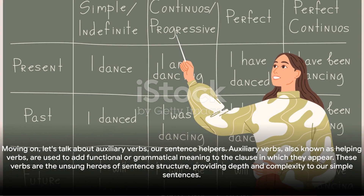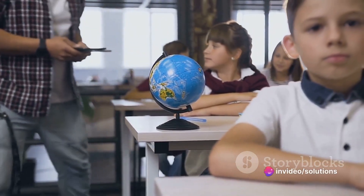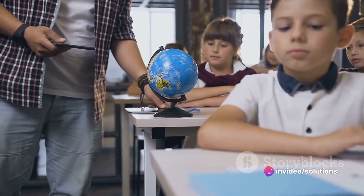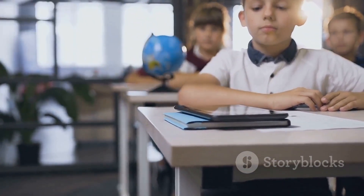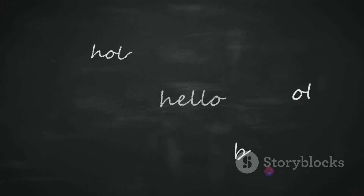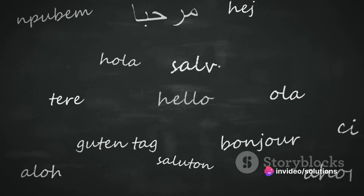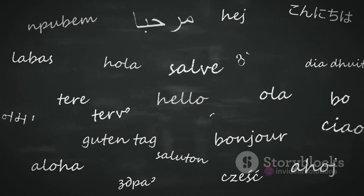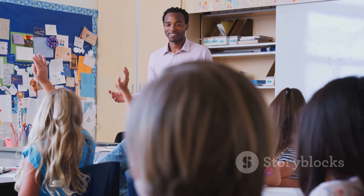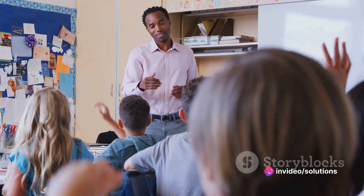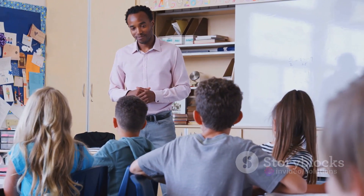Moving on, let's talk about auxiliary verbs — our sentence helpers. Auxiliary verbs, also known as helping verbs, are used to add functional or grammatical meaning to the clause in which they appear. These verbs are the unsung heroes of sentence structure, providing depth and complexity to our simple sentences. The primary auxiliary verbs in English are be, do, and have — they're like the Swiss army knives of verbs, versatile and multifunctional. For instance, the auxiliary verb 'be' can form continuous tenses: in 'she is reading a book,' 'is' conveys that the action is happening right now.